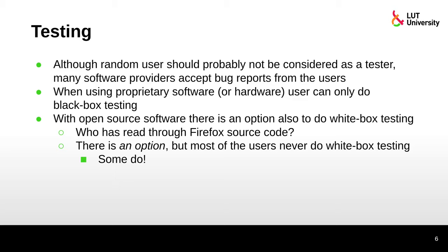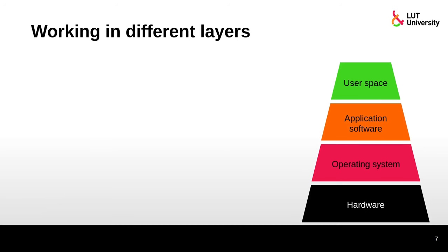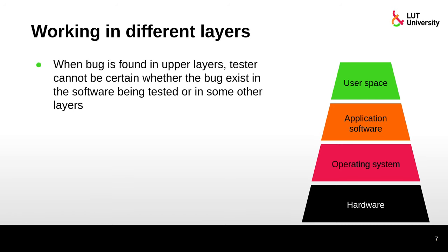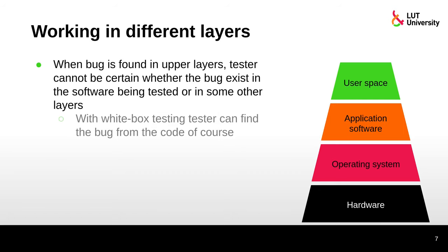There are those people who want to check the code — they download the Firefox source code, read it, find bugs, report them, and can even improve the code. That's the hacking spirit. When a bug is found in the upper layers, a tester cannot be sure whether the bug exists in the software being tested or in some other layer — whether doing white box or black box testing, you can't always be certain if the bug is in the software itself, the operating system, or even the hardware.